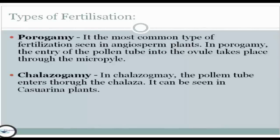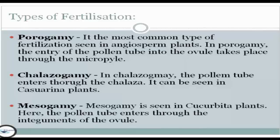Second, we have chalazogamy. In chalazogamy, the pollen tube enters through the chalaza and it can be seen in Casuarina plants. Third, we have mesogamy. Mesogamy is seen in Cucurbita plants, where the pollen tube enters through the integuments of the ovule.